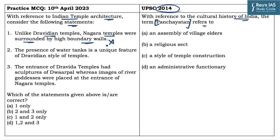The first statement is incorrect. It is Dravidian temples that were surrounded by high boundary walls, not Nagara temples. The second statement says the presence of water tanks is a unique feature of the Dravidian style of temples. This is a correct statement because the presence of a water tank inside the temple enclosure was indeed a unique feature of Dravidian style temples.